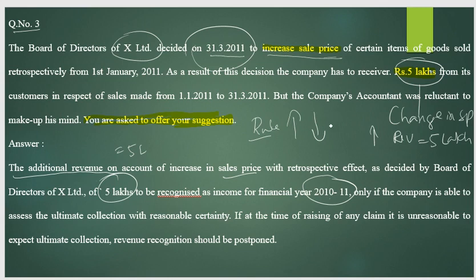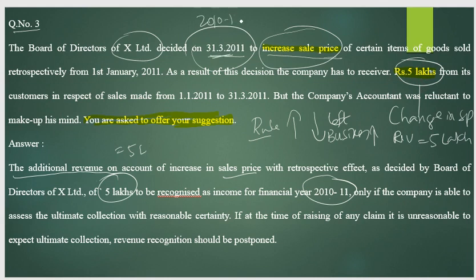There is no rule against increasing or decreasing the selling price — that is left to the businessman. This change in selling price will yield additional income, and that should be recognized as revenue in the year 2010-11 and shown in the profit and loss account.